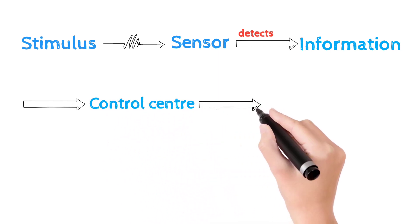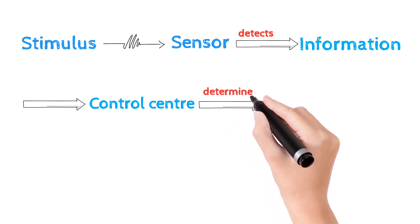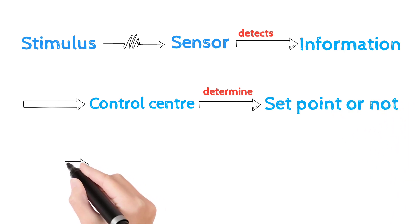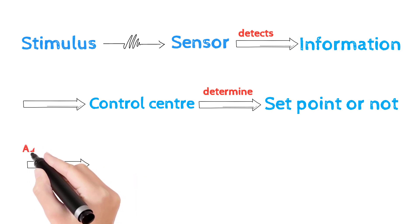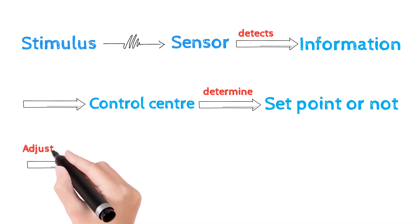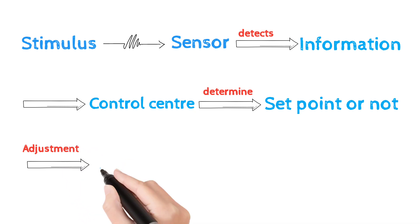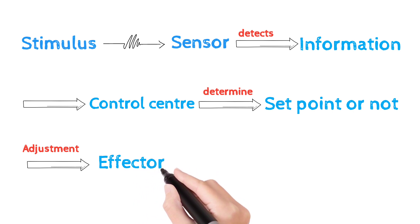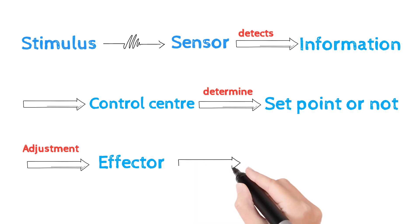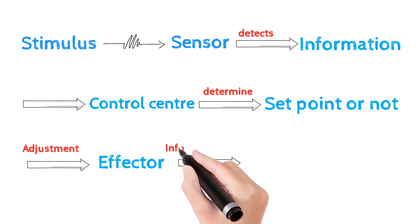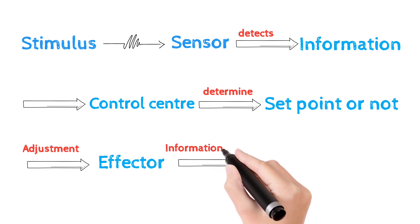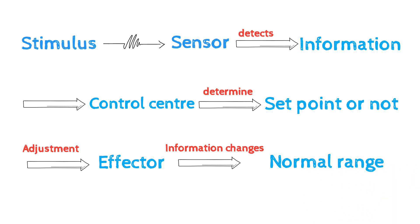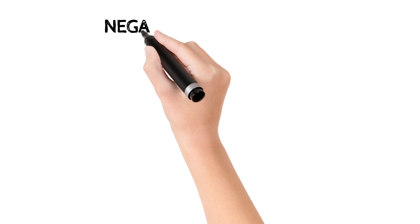The control center determines the limits - whether the body is within the set point range or normal range. The control center determines what the effector does. The effector causes the change to reverse the situation and return to the normal range. This is the negative feedback system.